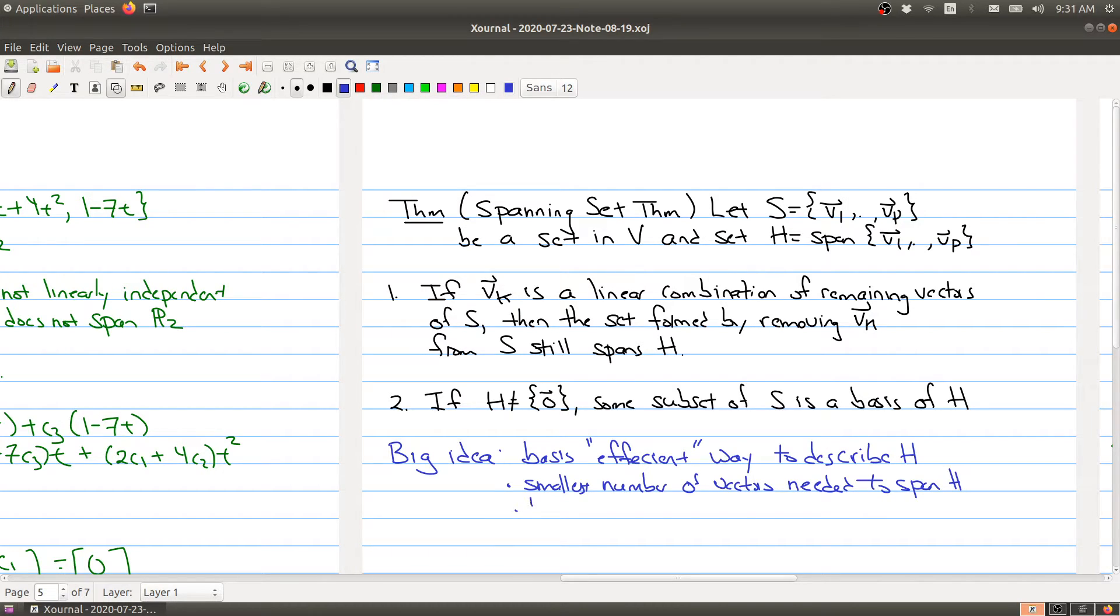Why a basis is efficient is that it's also the largest number of vectors that is linearly independent. We're doing two things at the same time: trying to make the largest set of vectors that are linearly independent, while also picking the smallest number to span the whole set. A basis sits at the intersection of these kind of opposing ideas. It's the efficient way of describing your vector space.